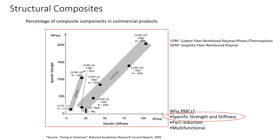In this graph, the share of composite components versus number of years in progress is shown. CFRP — carbon fiber reinforced polymer/plastic thermoplastics — are in popular use. GFRP, graphite fiber reinforced polymer, is the next favorite material. These materials offer specific strength and stiffness, part reduction and multifunctional usage.